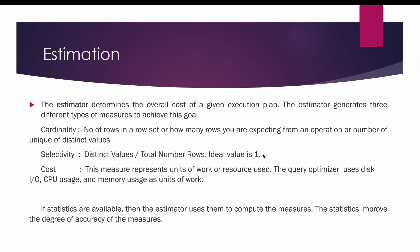Now if we take gender as the column, there may be 50 rows of male and 50 rows of female. In that case the number of distinct values will be 50 divided by the total number of rows, which is 100, so the selectivity becomes 0.5. This means if you are using the gender column in the where clause, it is probably not highly selective and can lead to a longer execution time.